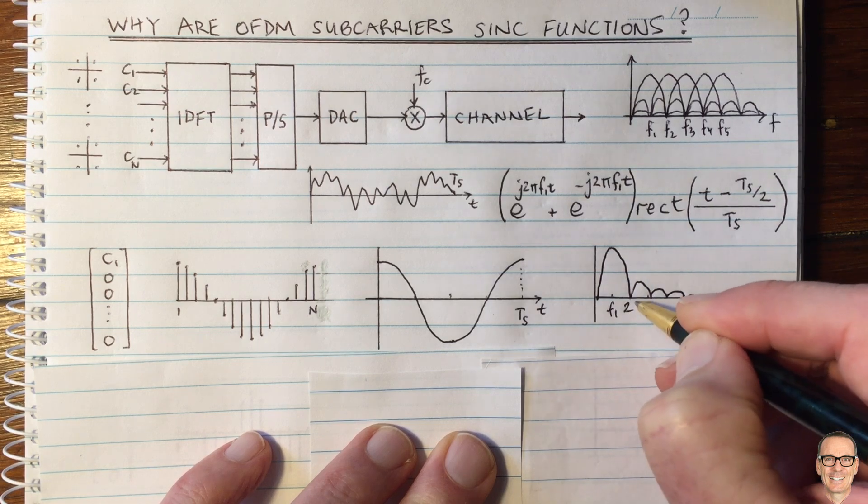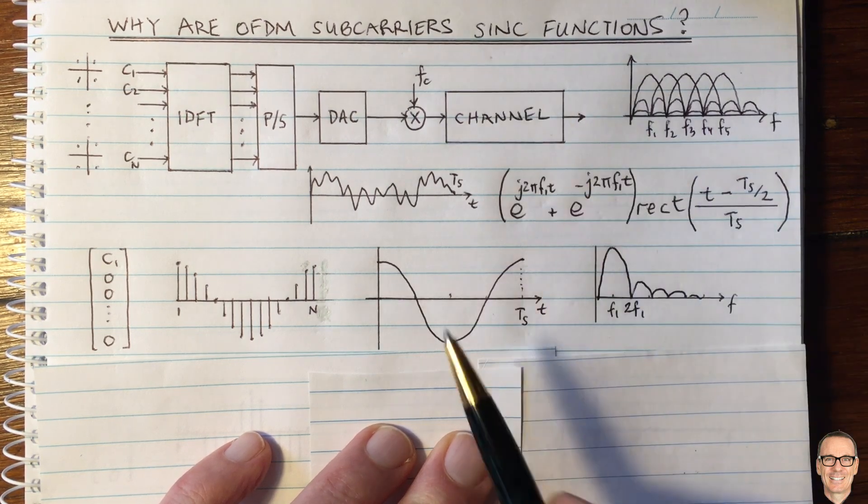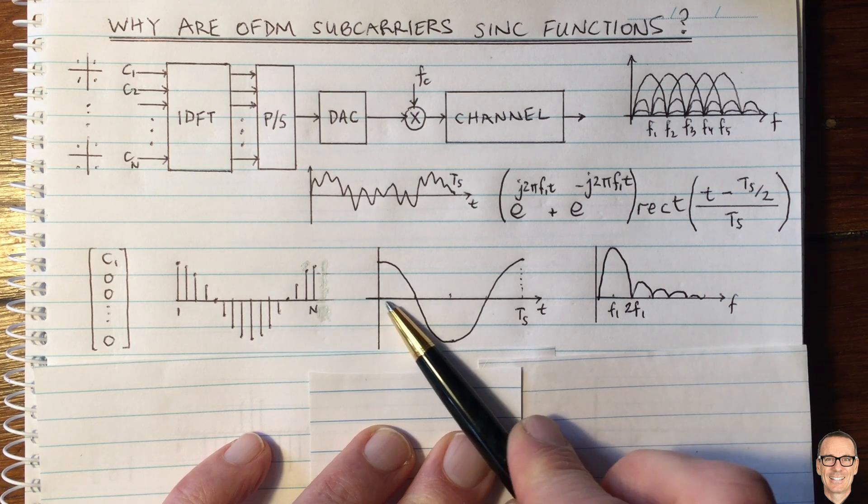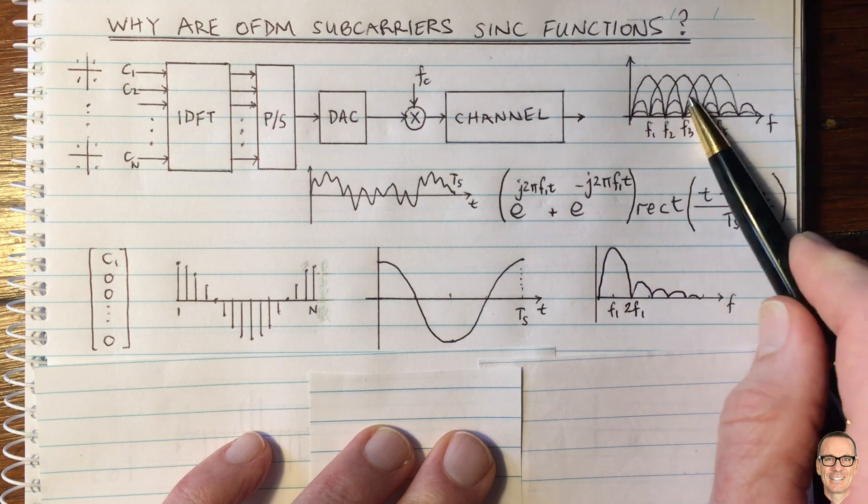So this is 2F1 here. So the sinc function comes about because you are only sending for a finite amount of time in each of the subcarriers.